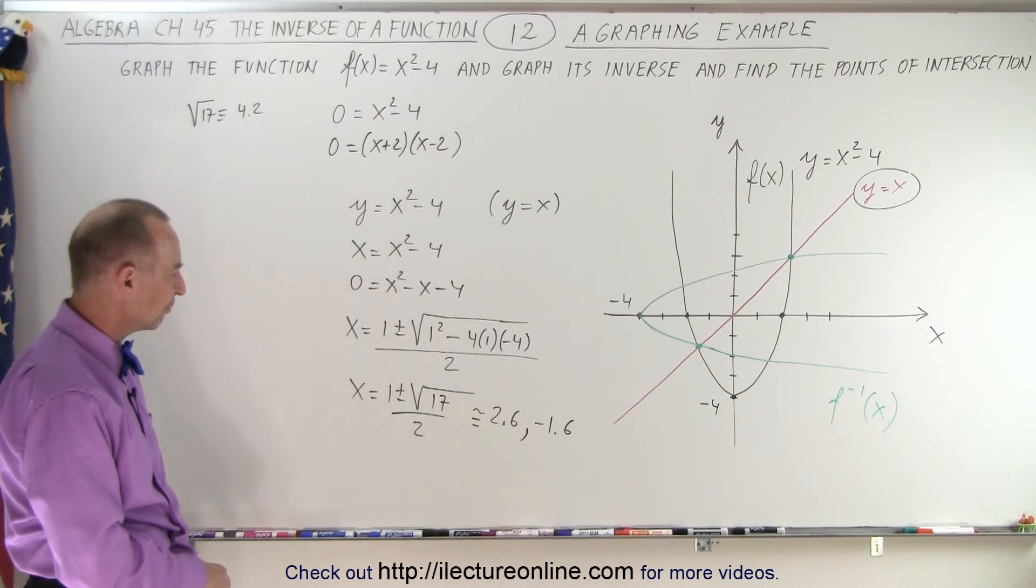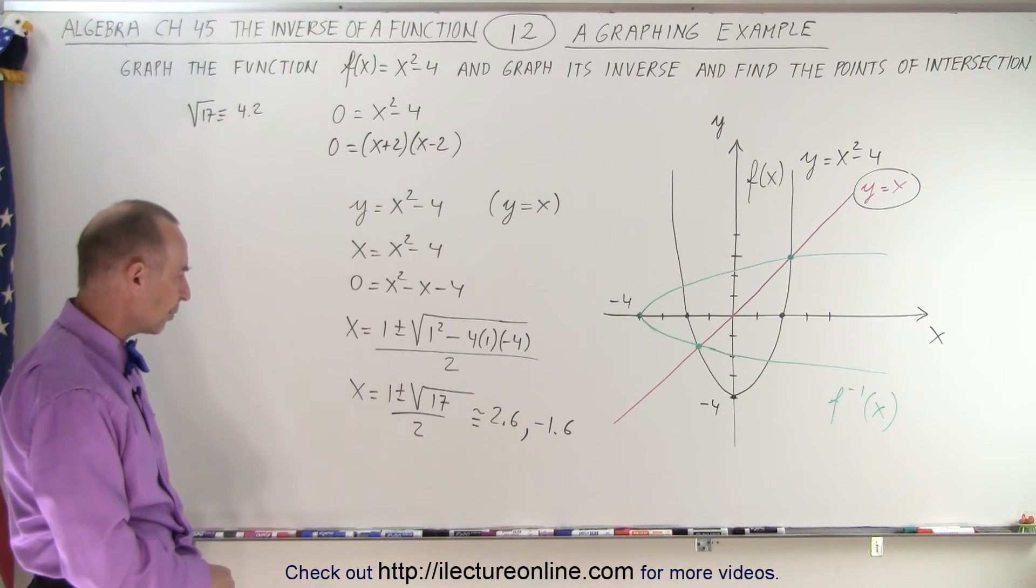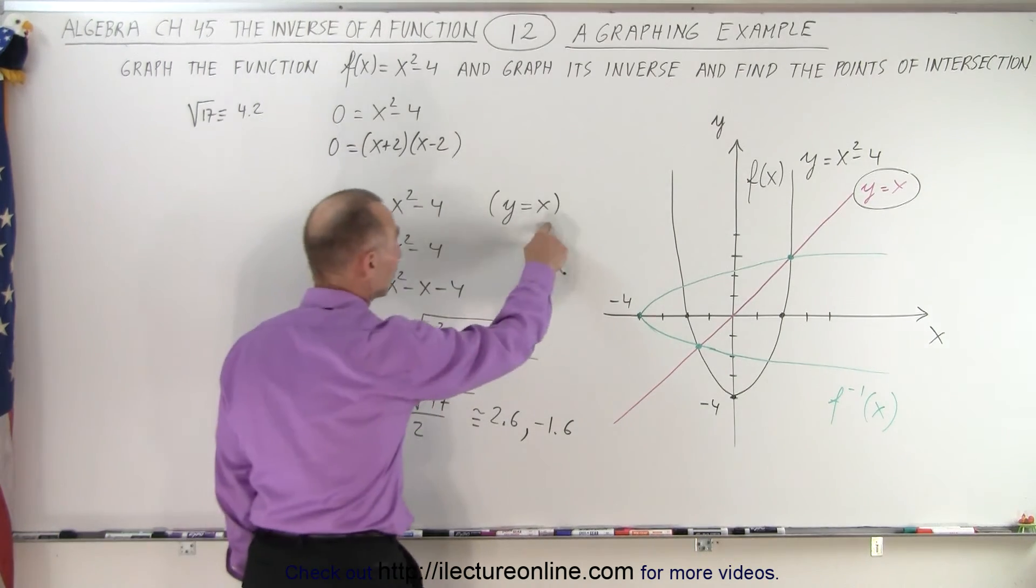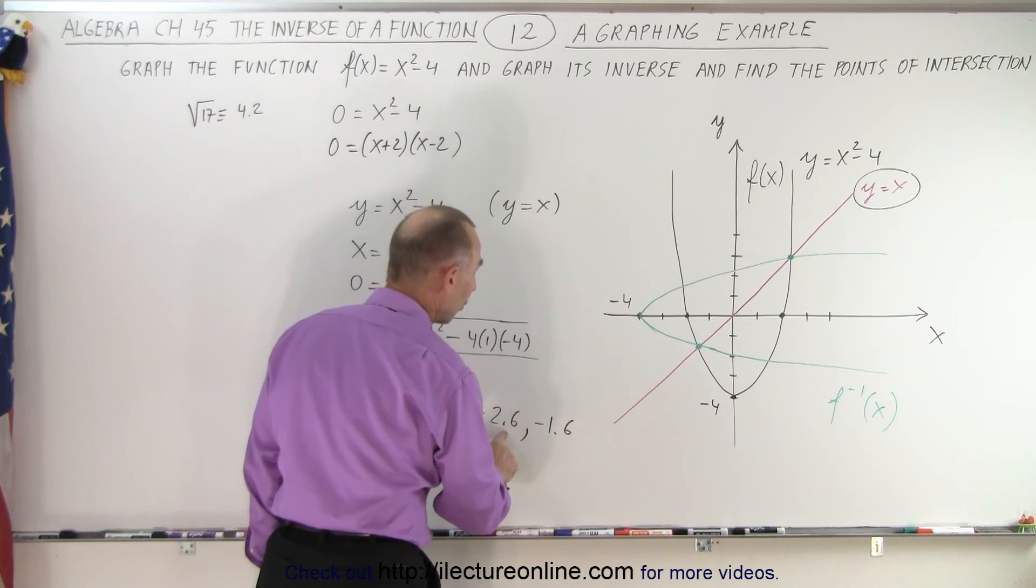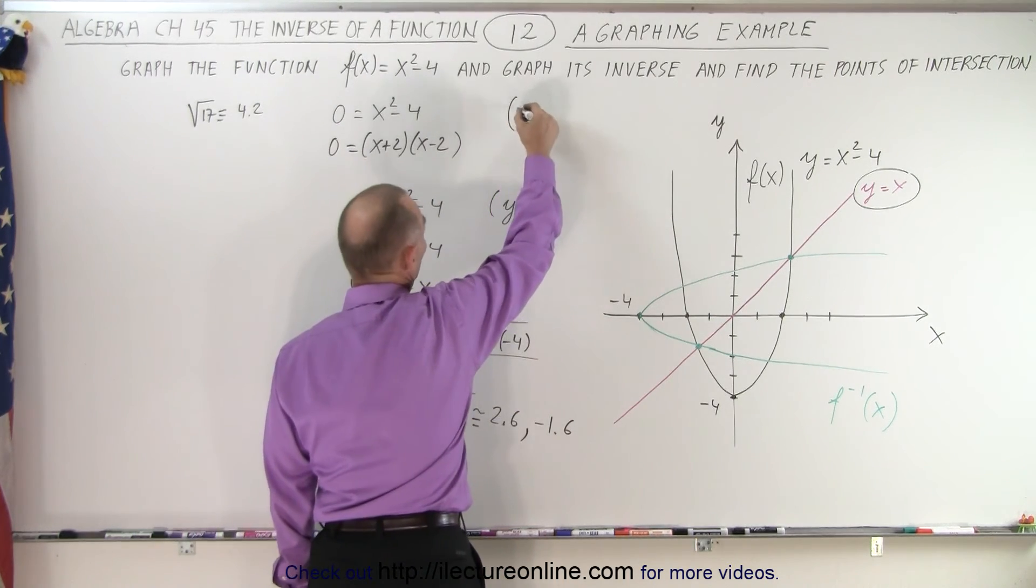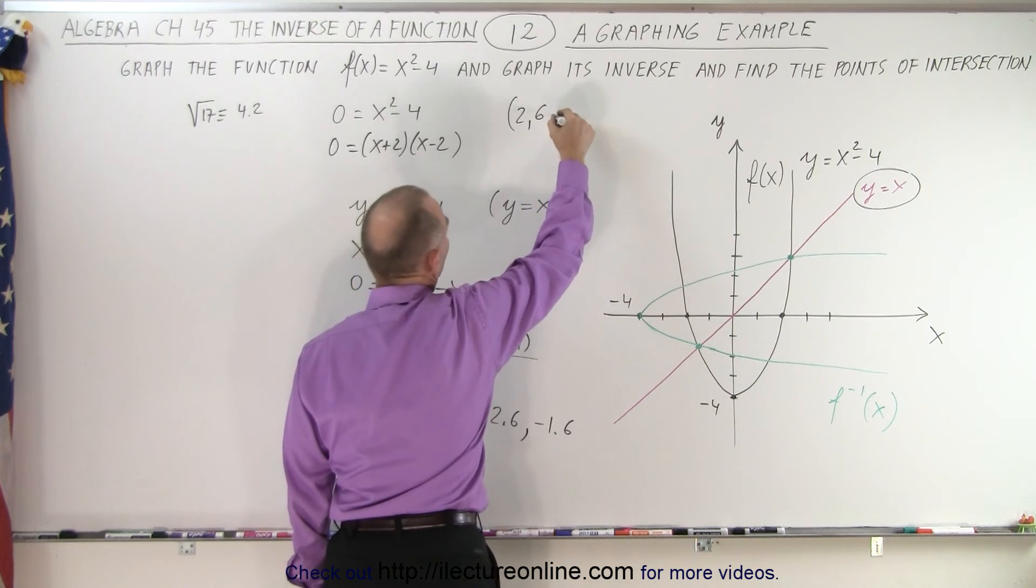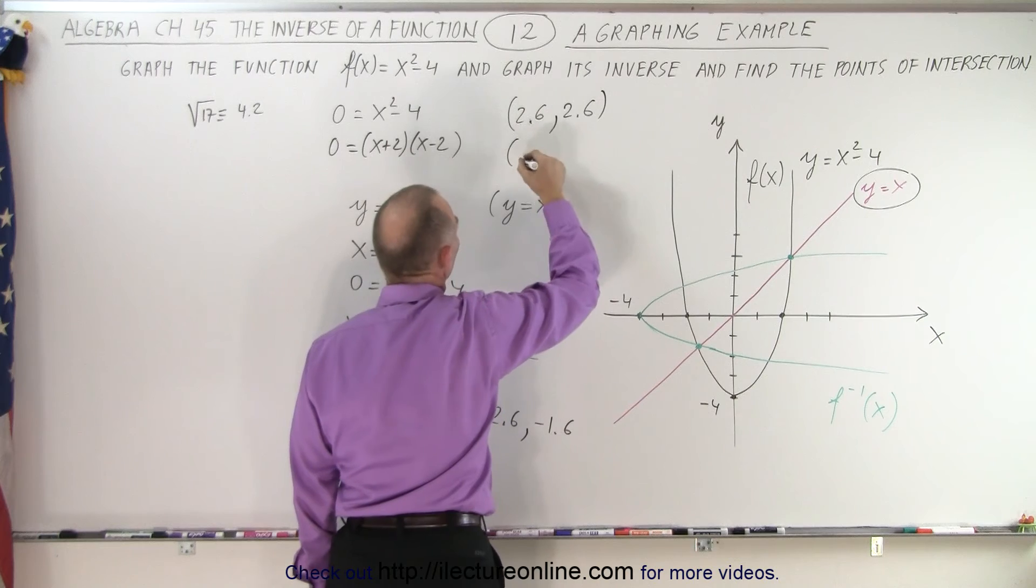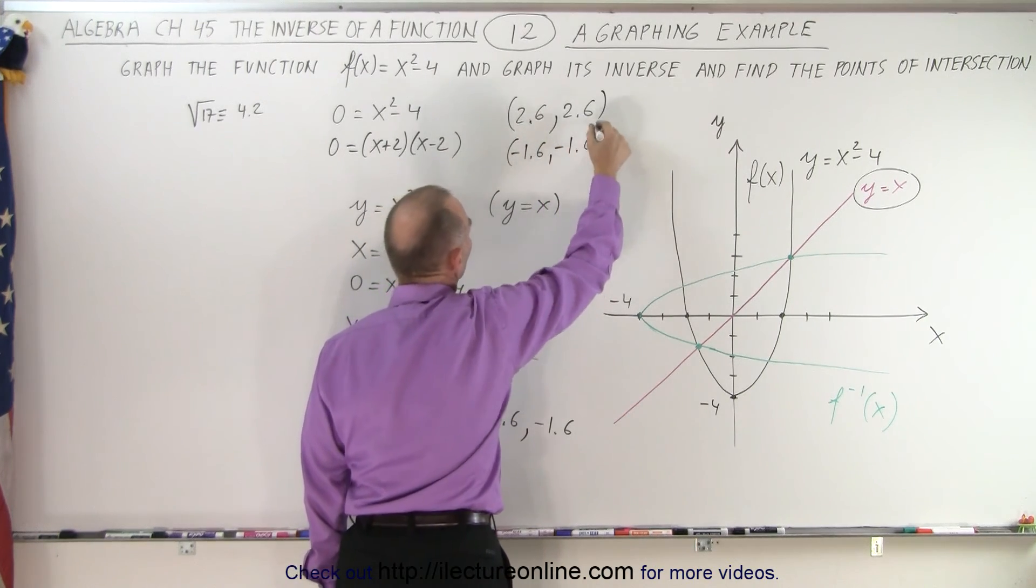Is that about right? 4.2, 5.2 divided by 2 is 2.6. 4.2 minus 1 is 3.2, 1.6. So those are the two points for x. And of course, since y equals x, that also will be the y value. So the two points where they cross, that would be at 2.6, 2.6. That should be a decimal point right there. And the other point would be minus 1.6 and minus 1.6.